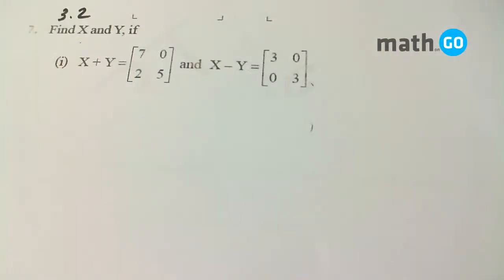Exercise 3.2, question number 7. It says find X and Y if X plus Y equals [7, 0, 2, 5] and X minus Y equals [3, 0, 0, 3].